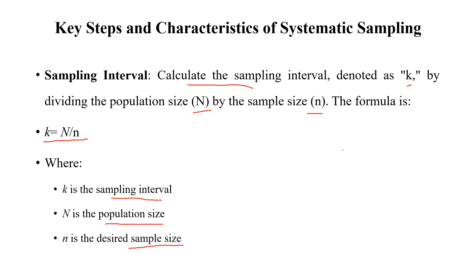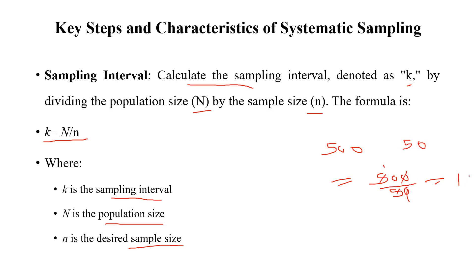For example, if our population size is 500 and our sample size is 50, then we can calculate the sampling interval as 500 divided by 50, which equals 10. So our sampling interval in that case is 10.